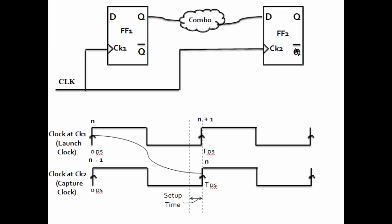Now we have two flip-flops. Data is getting launched at flip-flop 1 and it is getting captured at flip-flop 2 at the next clock edge. The nth data is launched from the launch flop and captured after one clock cycle at the capture flip-flop. The data launched at the launch flop should be present at the D pin of the capture flop at least setup time before the next active edge of clock arrives. So the required time for data to travel from launch flop to capture flop is the time period minus the setup time.